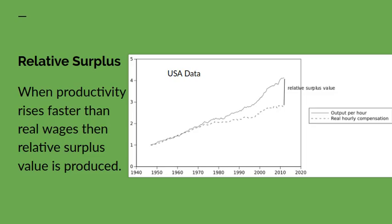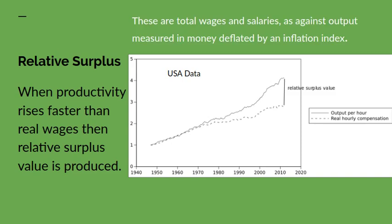Relative surplus value is generated when productivity rises faster than real wages. There's a well-known graph showing the rate of growth of productivity in the US — the upper line — and the rate of growth of real wages, and this gap between them is the relative surplus value that is being produced. This is looking at total wages and salaries against output measured in money and then deflated by an inflation index.